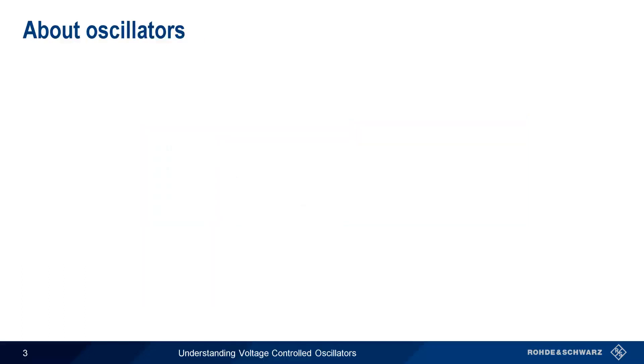To understand Voltage Controlled Oscillators, we'll start with a quick explanation of what an oscillator is. Broadly speaking, an oscillator is an electronic device that produces a repeating signal or waveform.